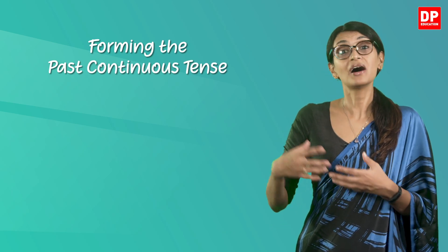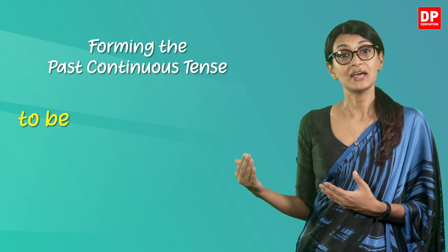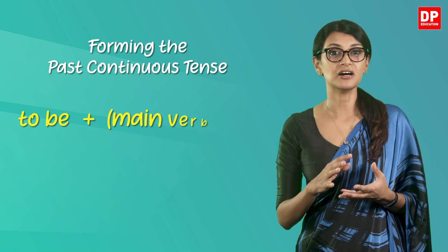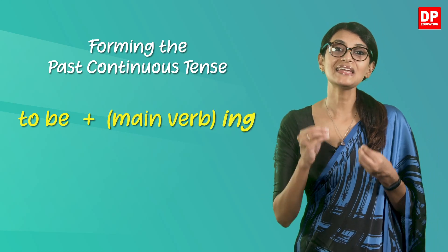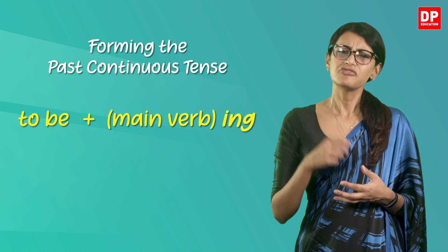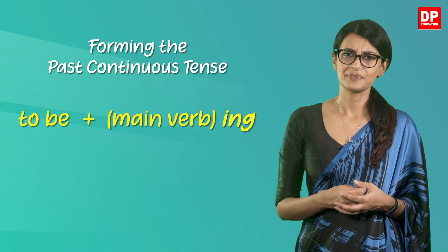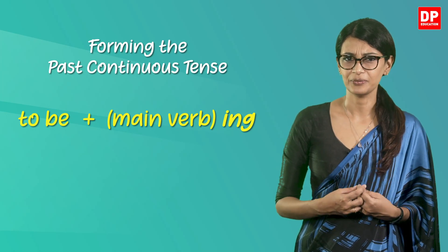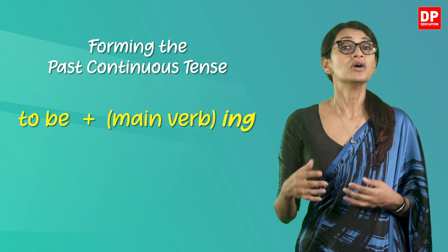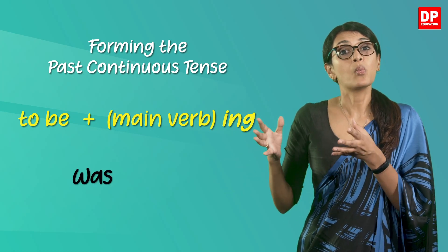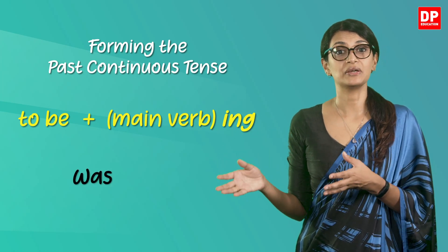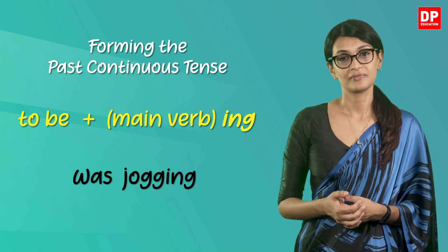So how do we form the past continuous tense? The past continuous is formed from the past tense of 'to be' with the base of the main verb plus the ending '-ing' form from the verb. For instance, in the example given, the past tense of 'to be' is 'was,' and the '-ing' ending verb is 'jogging.'